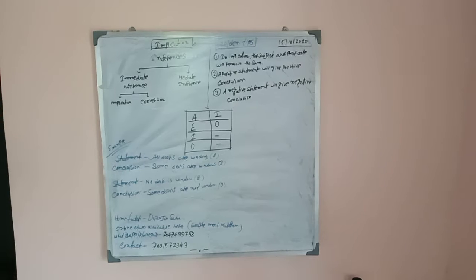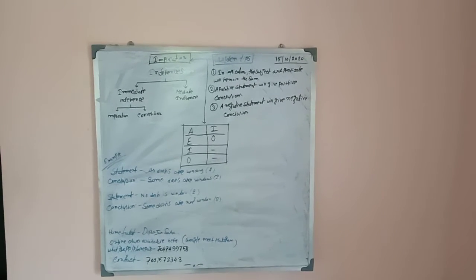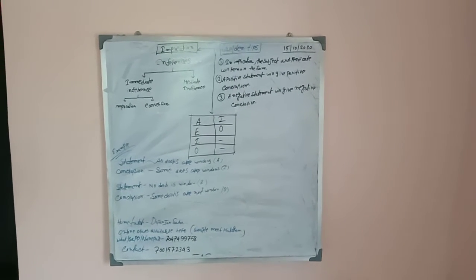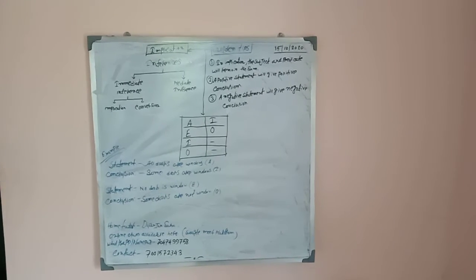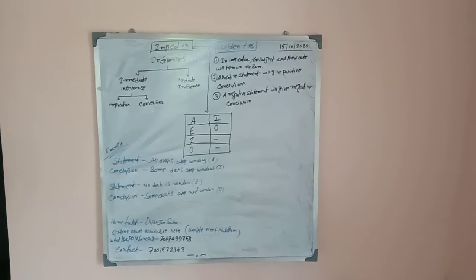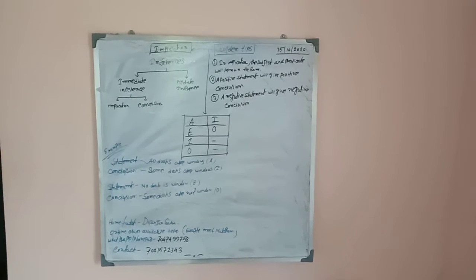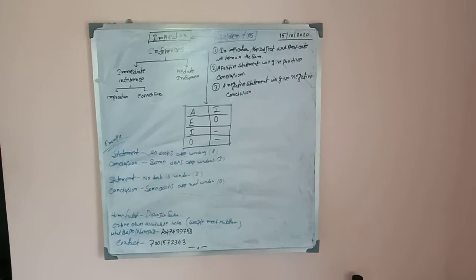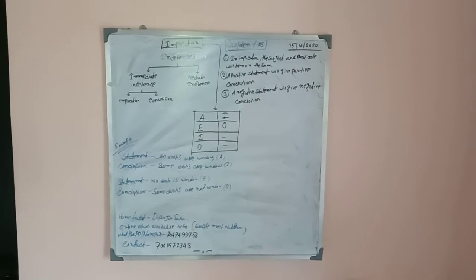In implication, the subject and predicate of the original proposition are examined. The predicate in the implied proposition is derived accordingly. Number 2: